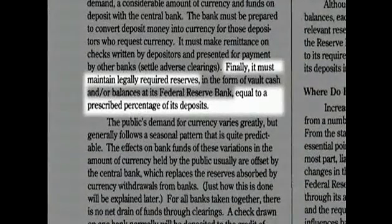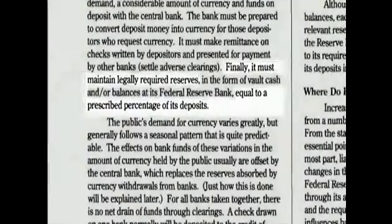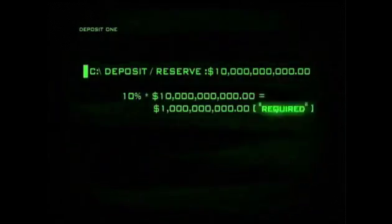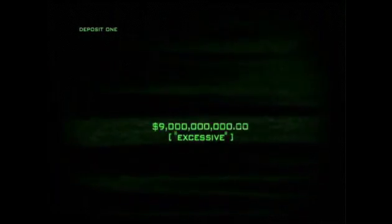So the exchange has been made and now $10 billion sits in a commercial bank account. Here is where it gets really interesting. For, as based on the fractional reserve practice, that $10 billion deposit instantly becomes part of the bank's reserves, just as all deposits do. Regarding reserve requirements, as stated in Modern Money Mechanics, a bank must maintain legally required reserves equal to a prescribed percentage of its deposits. Under current regulations, the reserve requirement against most transaction accounts is 10%. This means that with a $10 billion deposit, 10% or $1 billion is held as the required reserve, while the other $9 billion is considered an excess reserve and can be used as the basis for new loans.